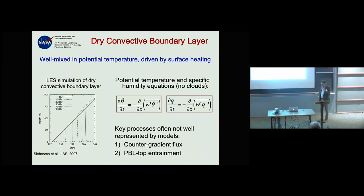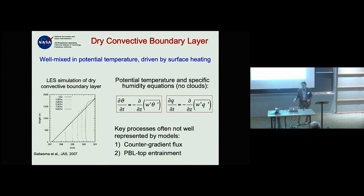Even the simplest convective problem you can imagine, global atmospheric models — both for weather and climate — can't do very well. When you enter the cloud world with phase transitions, the complexity increases further.